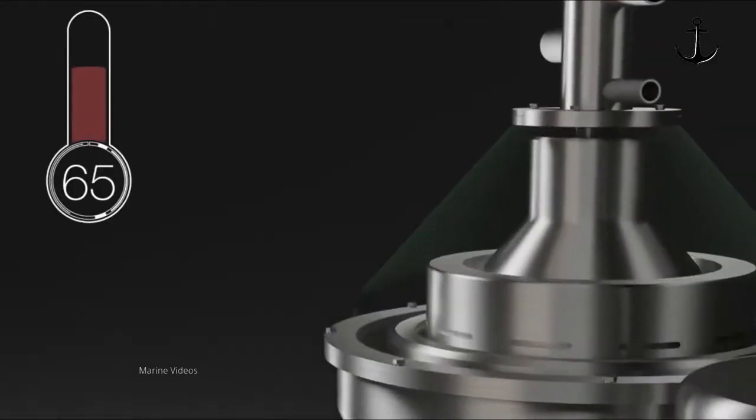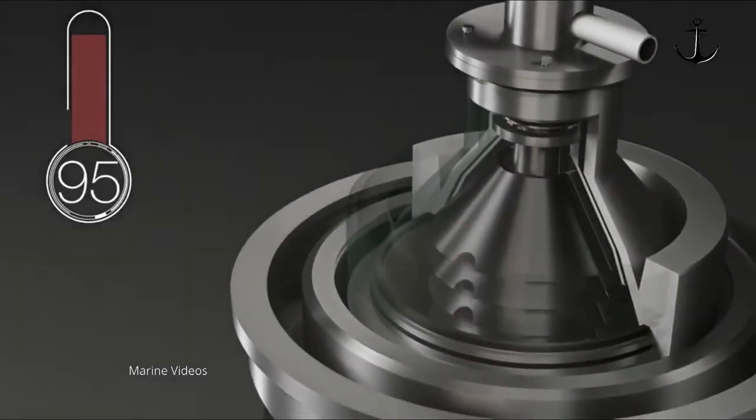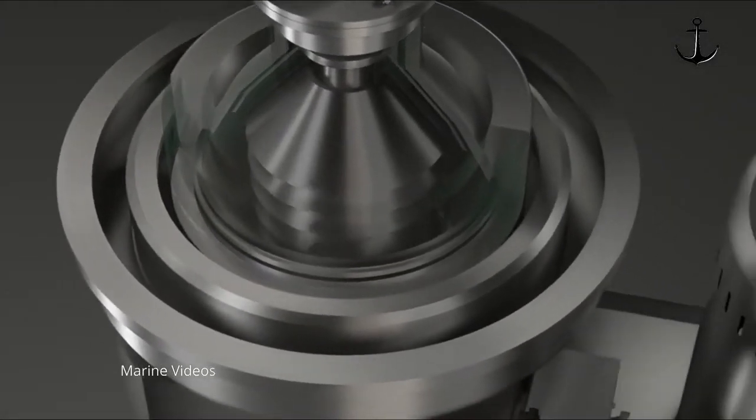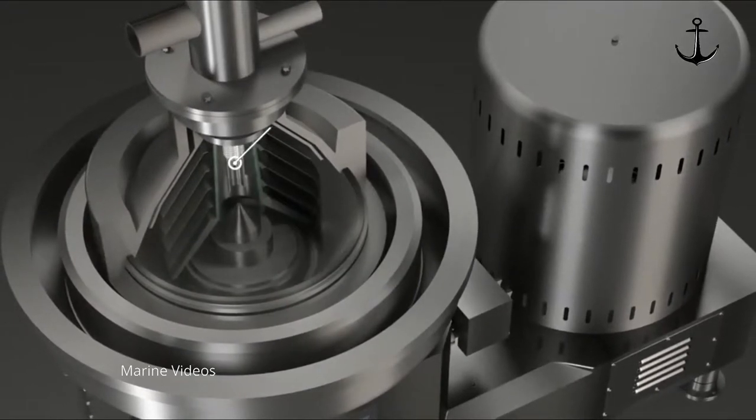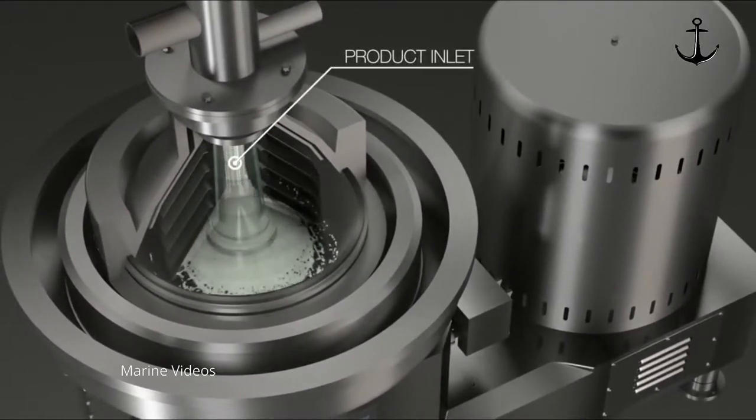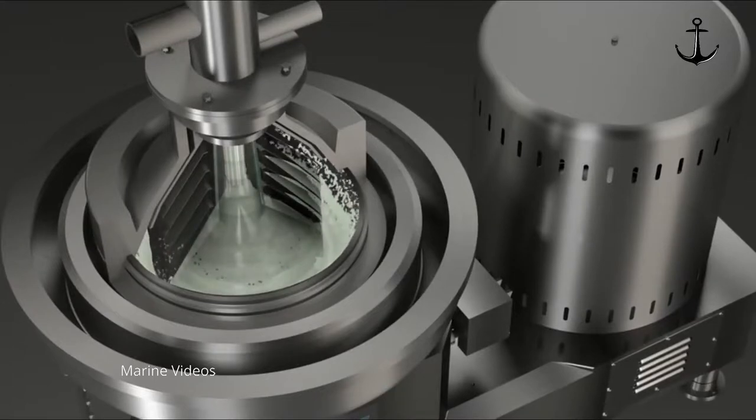Separation takes place after temperature conditioning if required. The continuous separation process starts when the product is gently introduced into the bowl through the feeding pipe and the distributor.